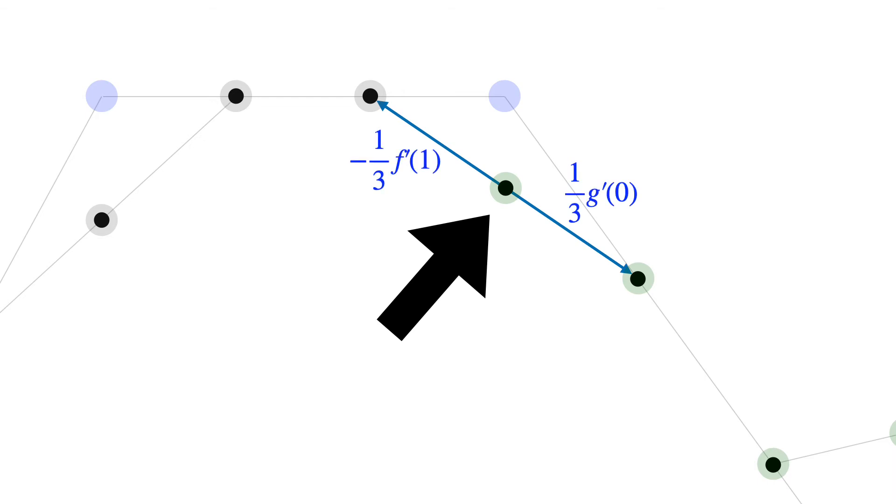The knot exactly bisects the line between the adjacent two control points, and this means that the two derivatives are equal. There's a similar argument for why the second derivatives are also equal at the knot. This very clever construction guarantees a C2 spline.